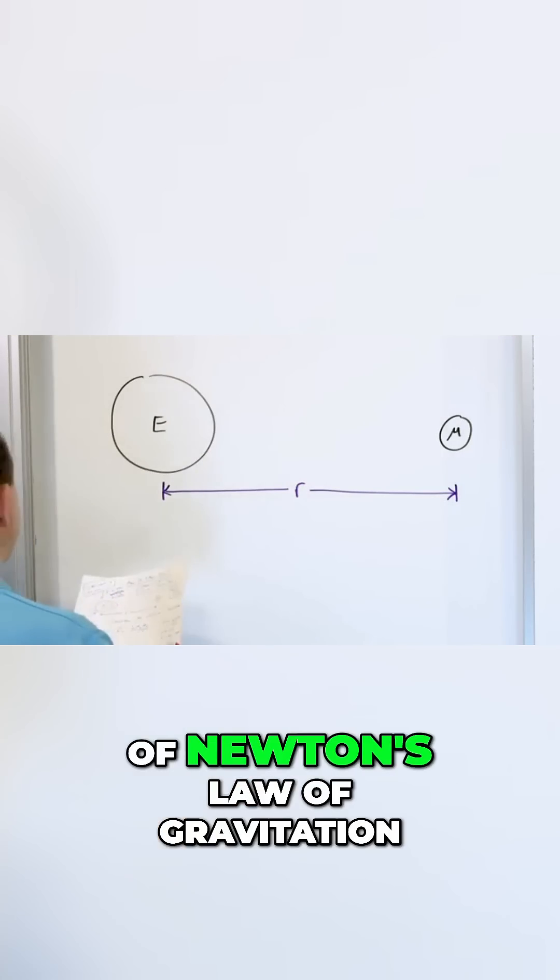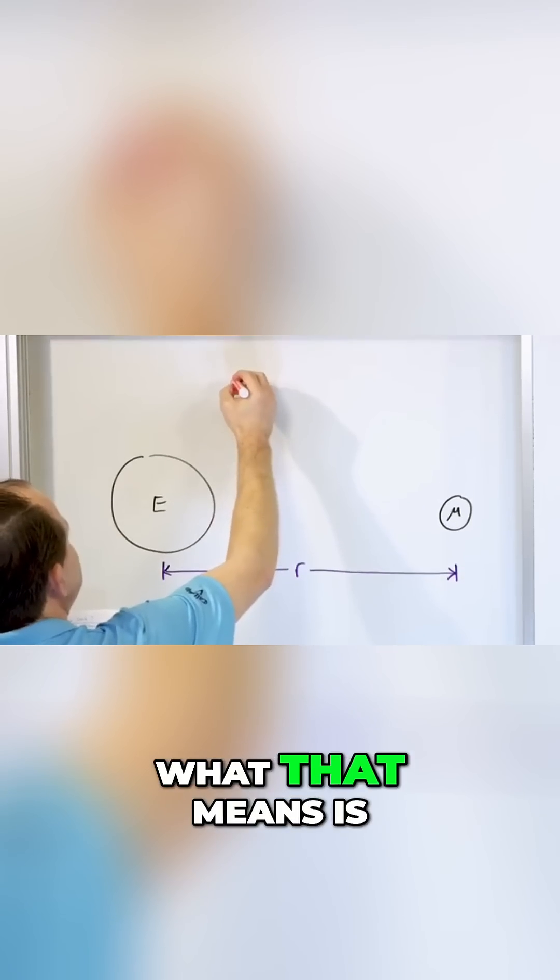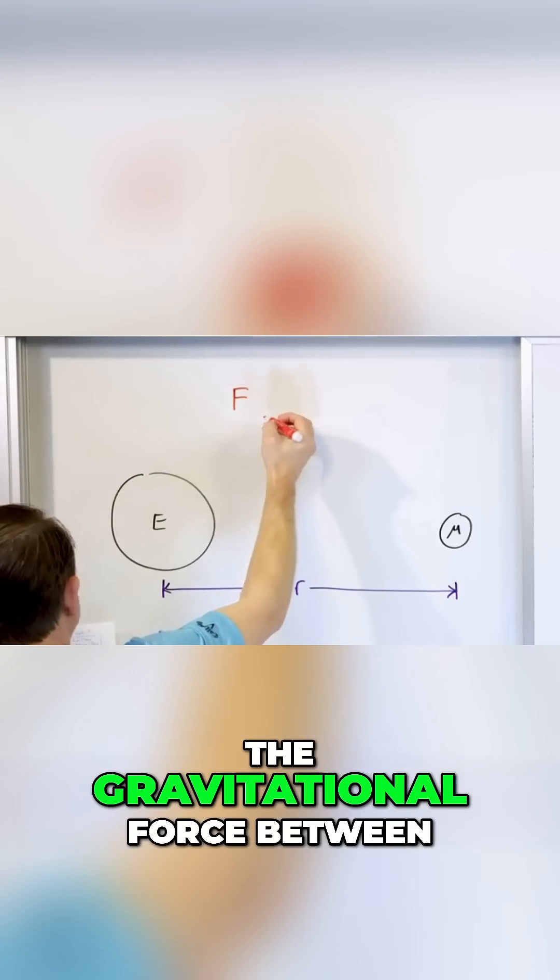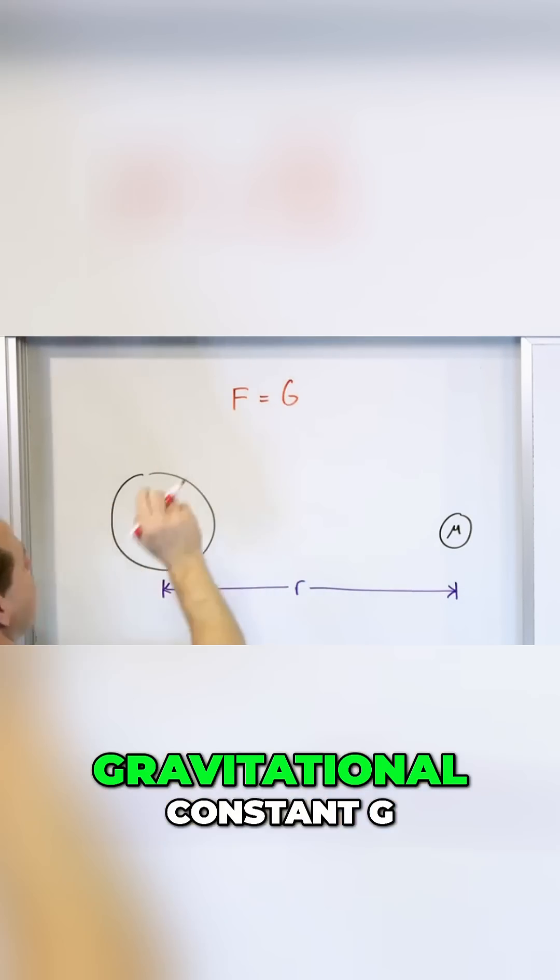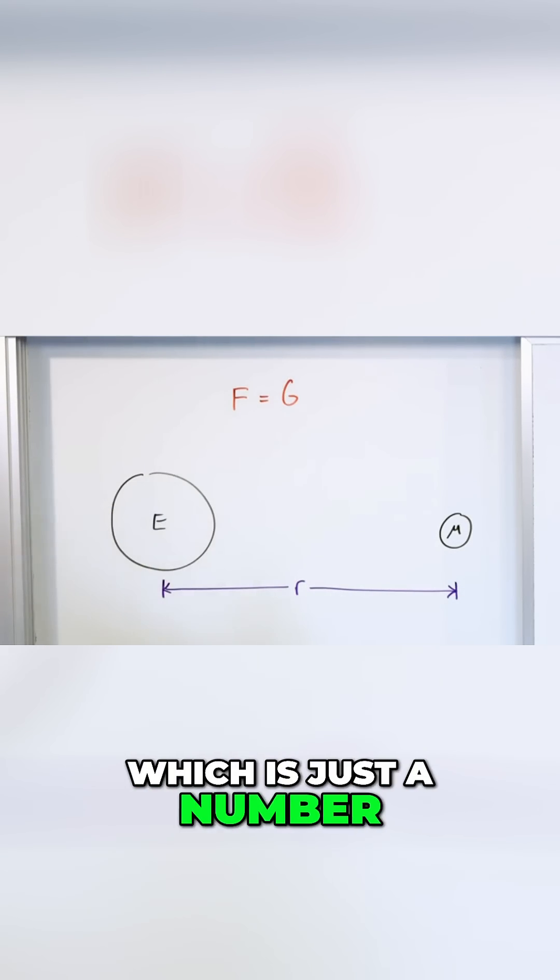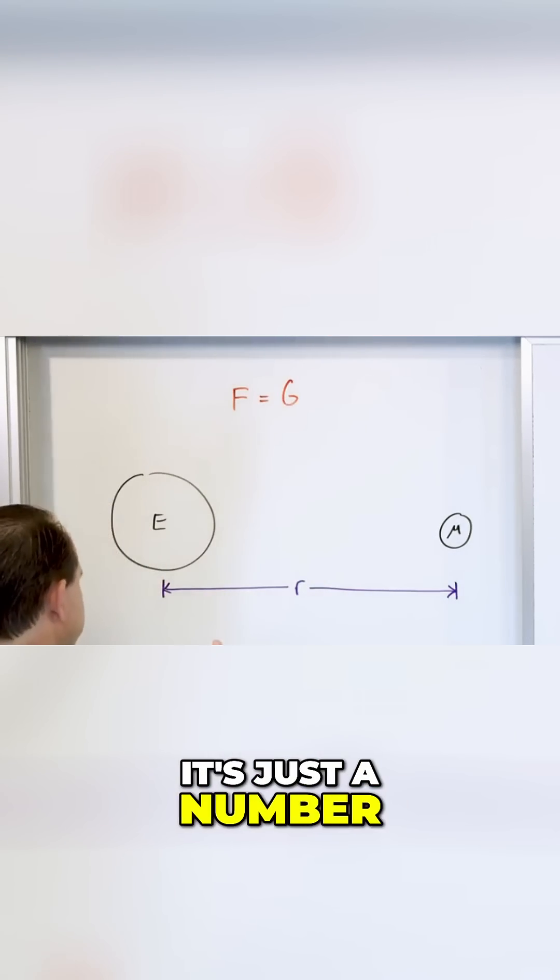What is the equation of Newton's Law of Gravitation? What that means is the force, the gravitational force between any two bodies in the universe, is some gravitational constant G, which is just a number, so don't get too worried about it.